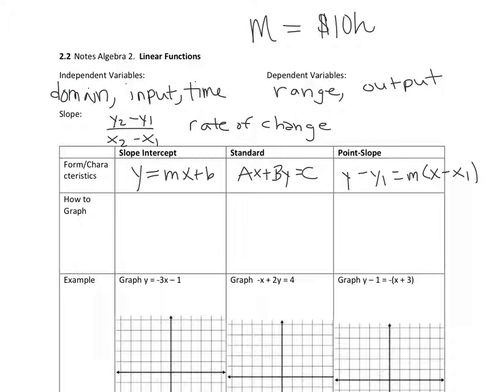So independent variables is the domain or the X variable or the input. I also put time on here because a lot of times it's time. Dependent variable is Y, it's the output, it's the range.